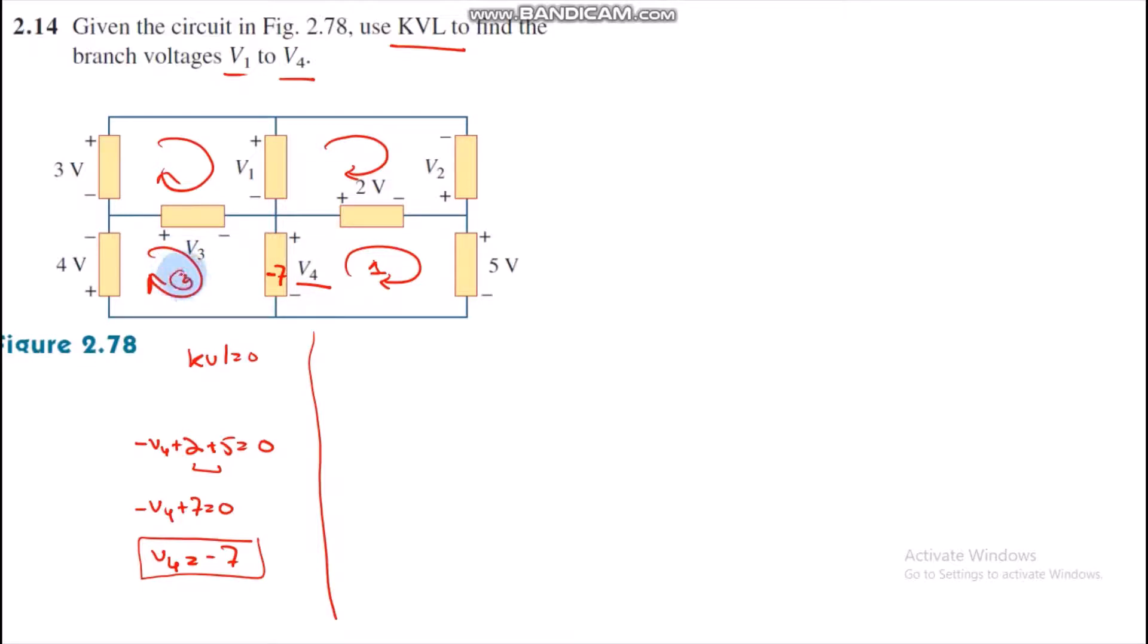Then it is loop 2. Here we will find V3. V4 plus V3 minus 7, which we have already calculated. When we solve it, minus 7 and 4, we get minus 3 plus V3 equals zero. Then V3 equals 3 volts.